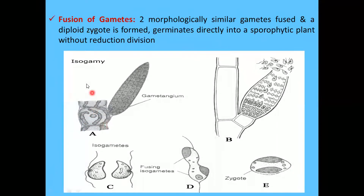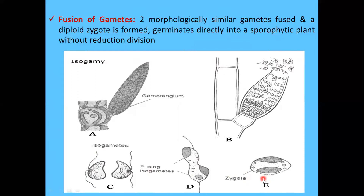As shown in the figure, the haploid plant bears a gametangium containing gametes. When the gametangium matures, its wall breaks and releases the isogametes. These male and female gametes are similar in structure and size, both bearing two flagella. When these two fuse, a diploid zygote is formed, which directly germinates into a sporophytic plant without meiosis.